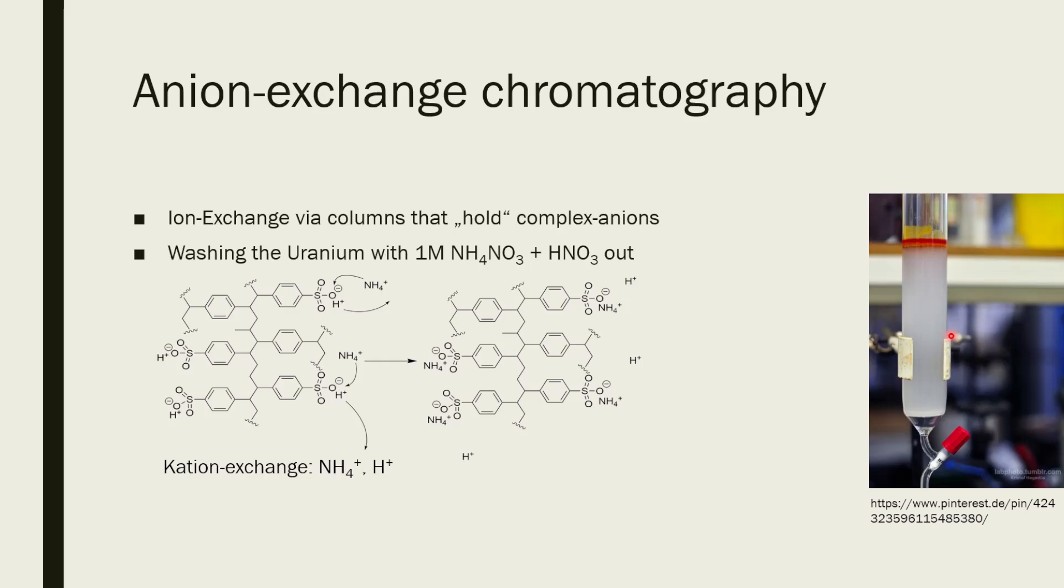All of the other positively charged ions, like all of these transition metals, most of them will just be flushed out. And once you have the uranyl in this ion exchanger, you can then separately wash it out with ammonium nitrate solution in nitric acid.